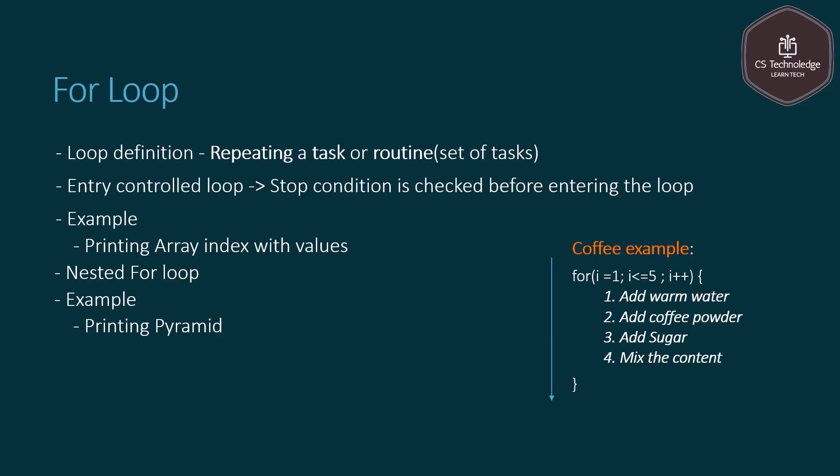Loop definition: repeating a task or routine, where a routine is a set of tasks. A task is a very basic activity. For example — add warm water, add coffee powder, add sugar, mix the content — each one is a task, and the full set of tasks is a routine. When you repeat that in a loop, that is the loop.